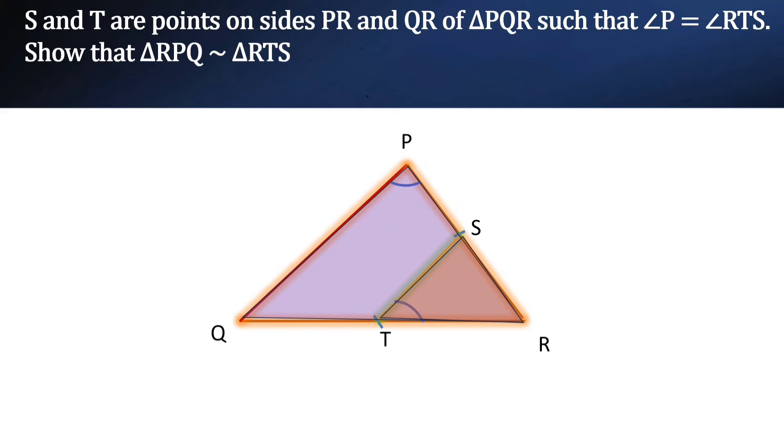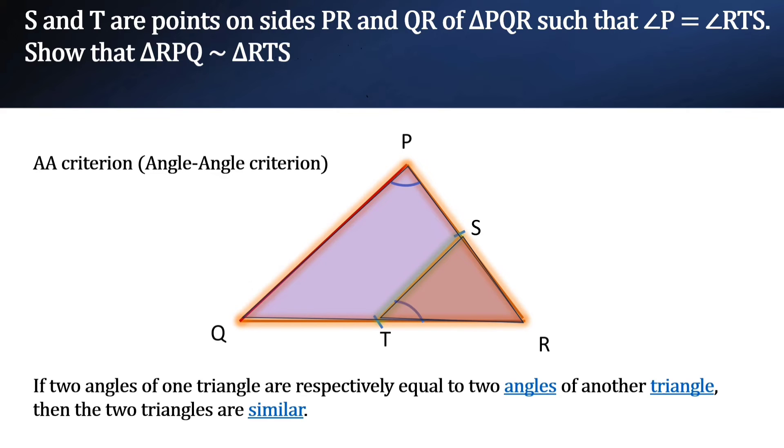By looking at the figure we can prove the triangles are similar by AA criterion. What is it? If two angles of one triangle are respectively equal to two angles of another triangle then the two triangles are similar.